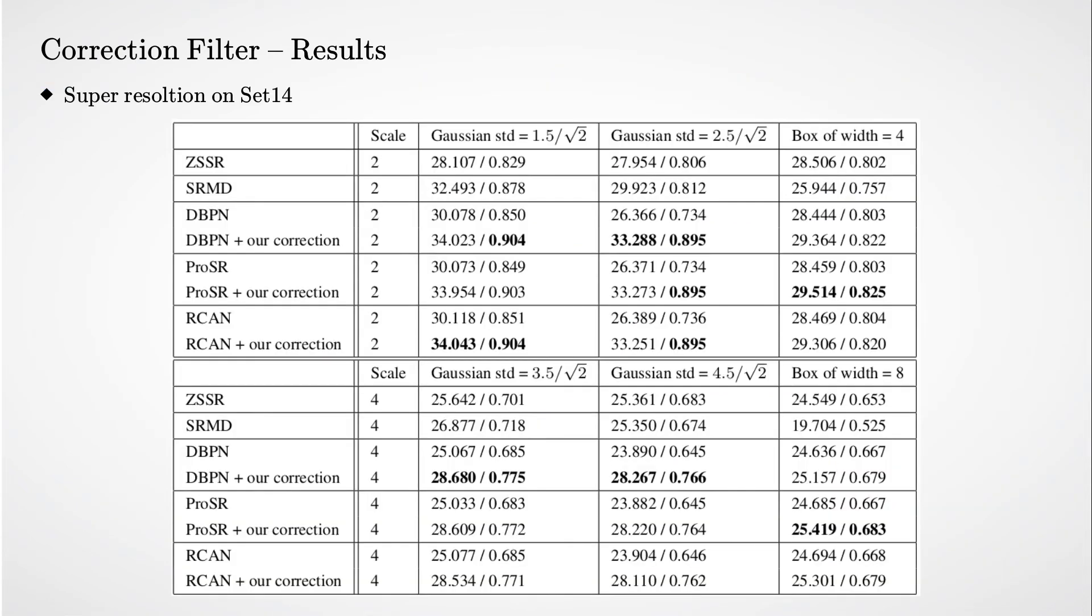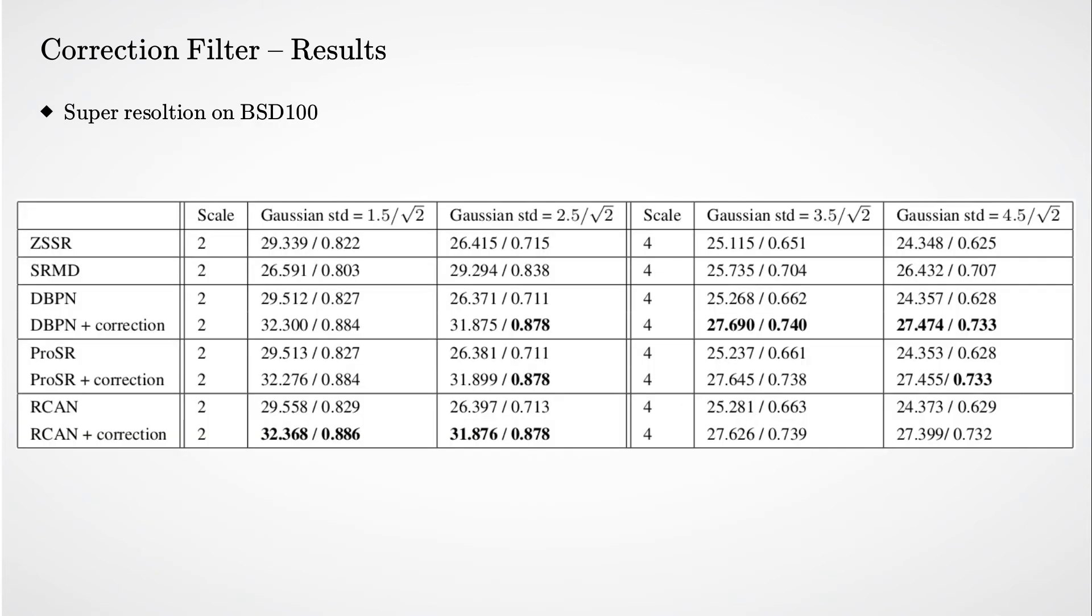In numbers, here we can see the performance improvement on Set14 for Gaussian and box filters. In some cases, we see almost 7 dB improvement in PSNR compared to not using the correction filter. We perform similar tests on the BSD100 dataset, and a similar boost in performance is achieved.